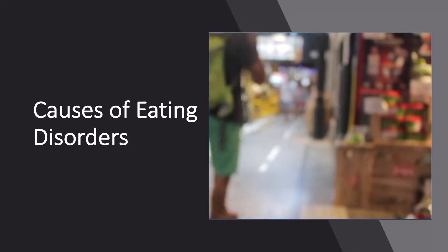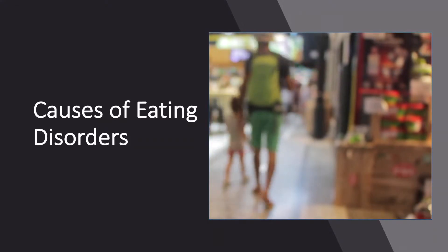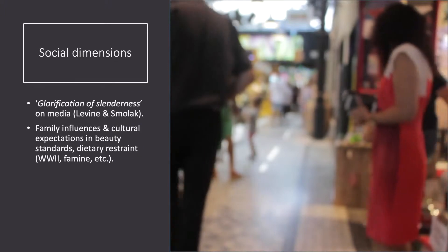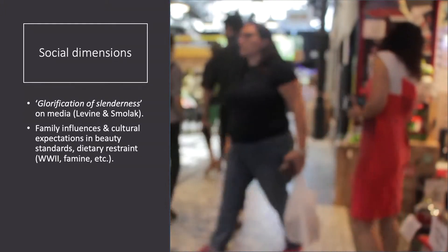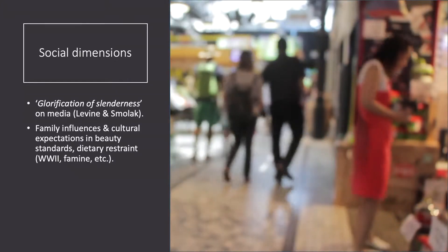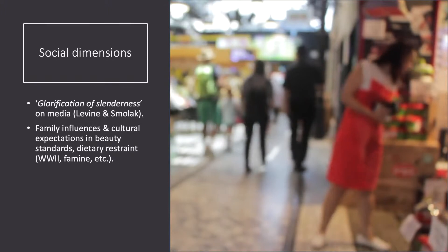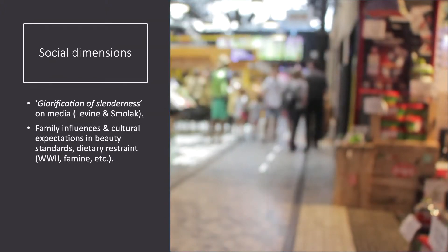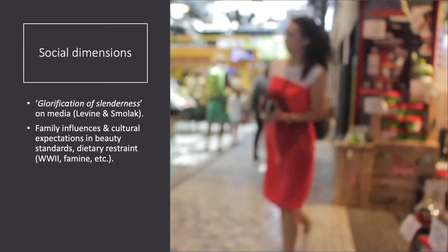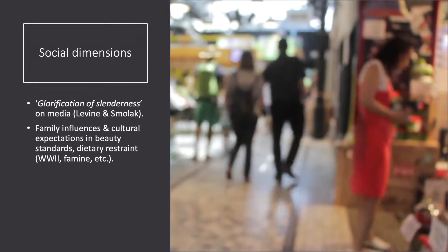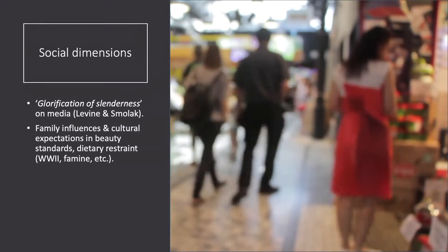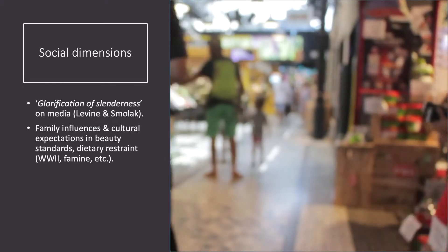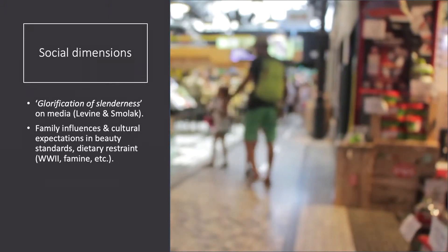Causes of eating disorders: various causes can include social dimensions such as the glorification of slenderness in the media, according to Levine and Smollock, family influences and cultural expectations in beauty standards, and dietary restraints — for example, WWII famine, as in historical events.